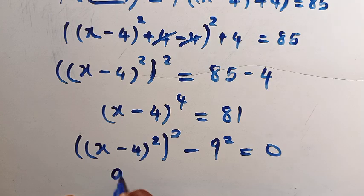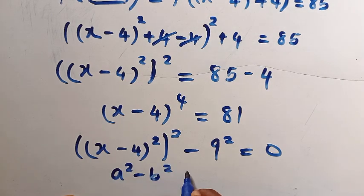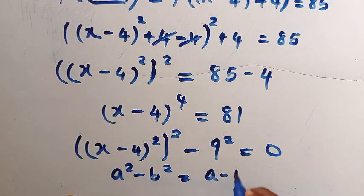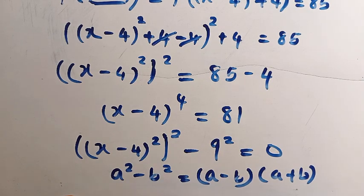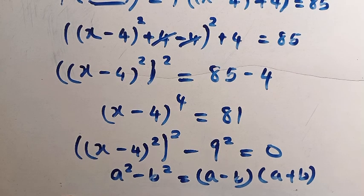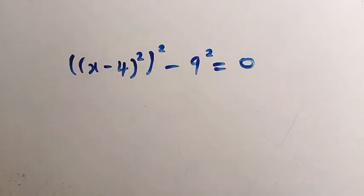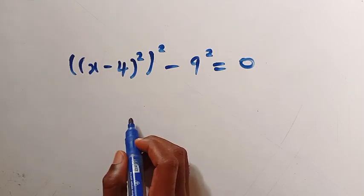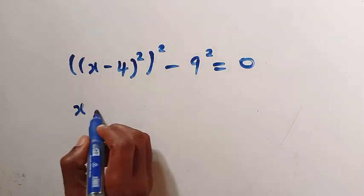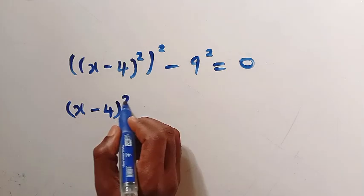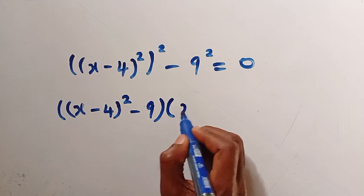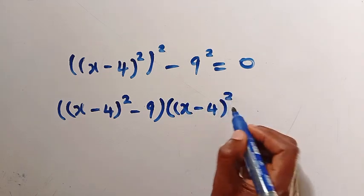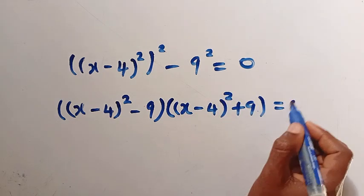We consider the expression a squared minus b squared, which equals a minus b multiplied by a plus b — the difference of two squares. Applying that here, we have (x minus 4 squared minus 9) multiplied by (x minus 4 squared plus 9) equals 0.